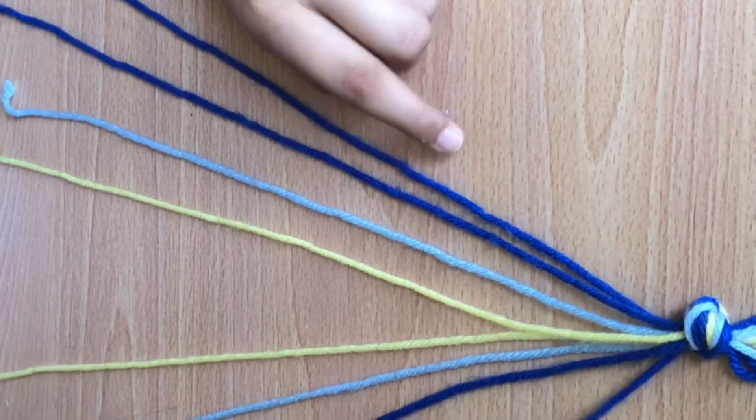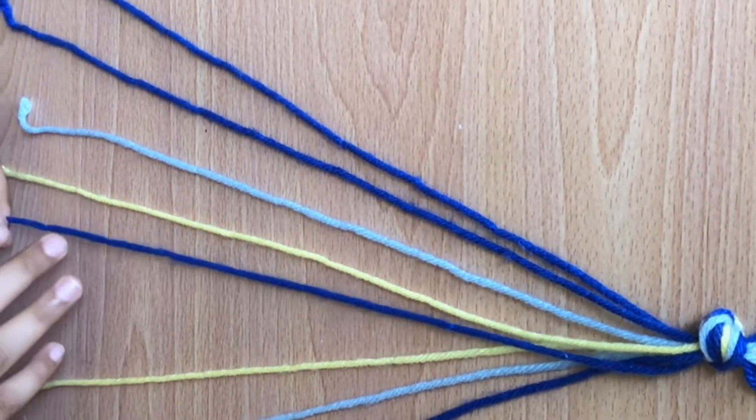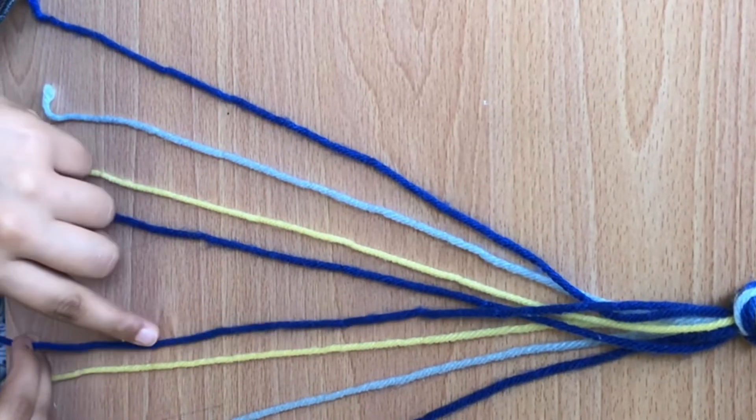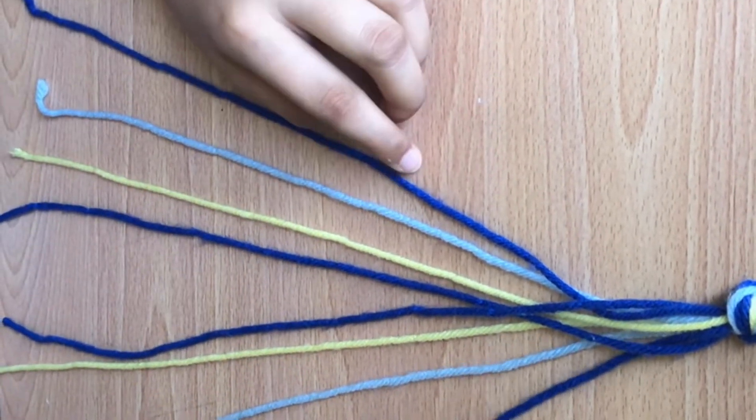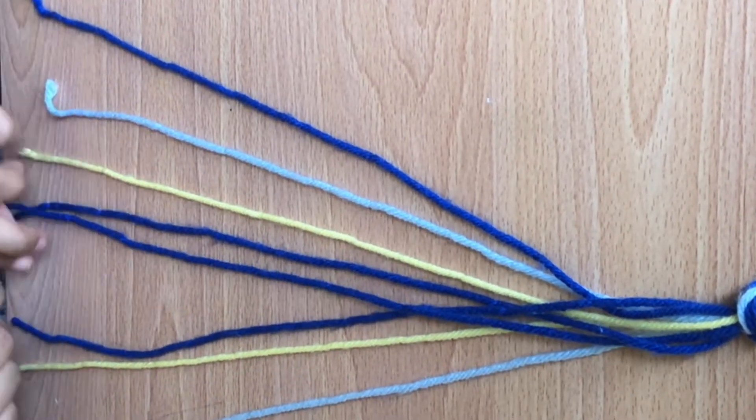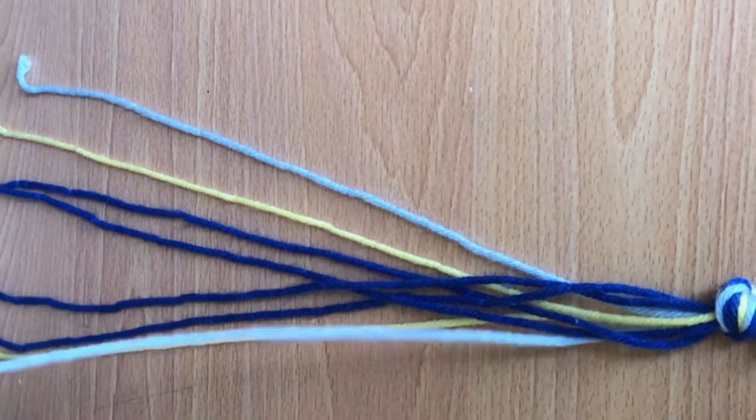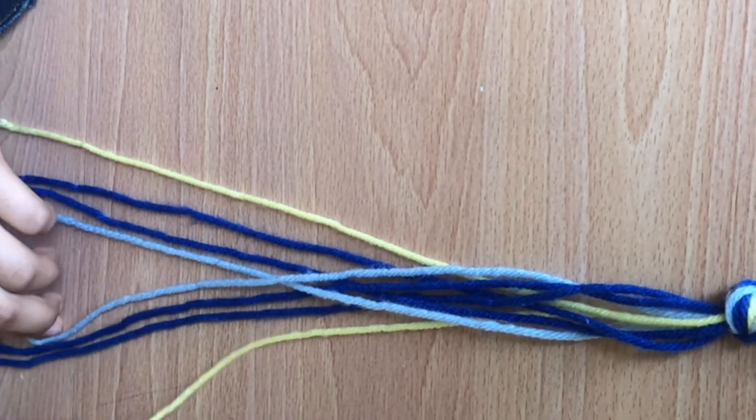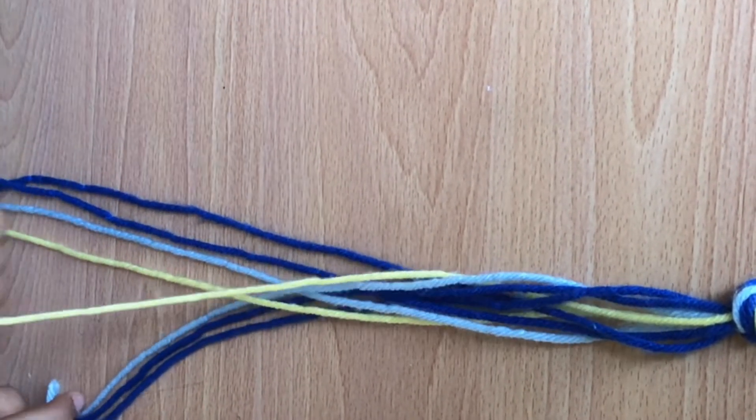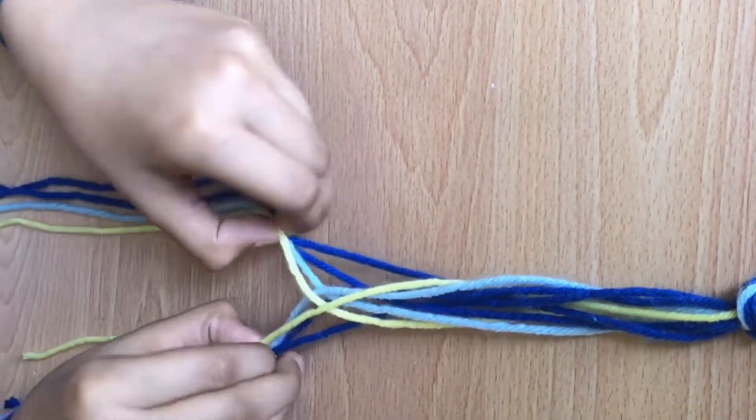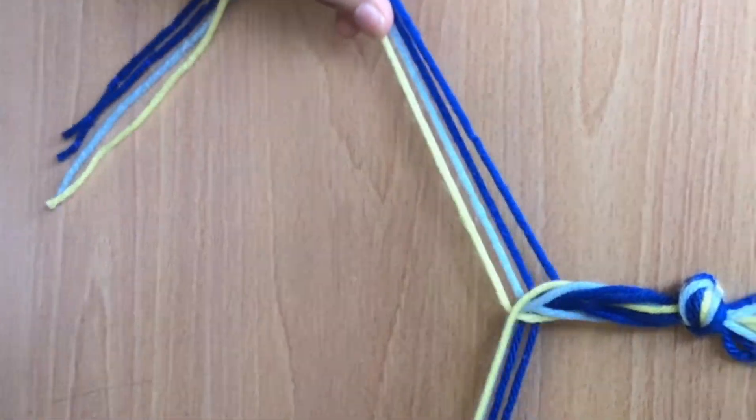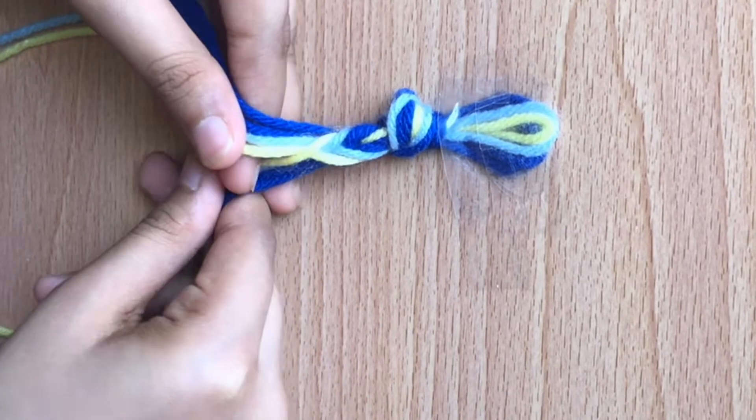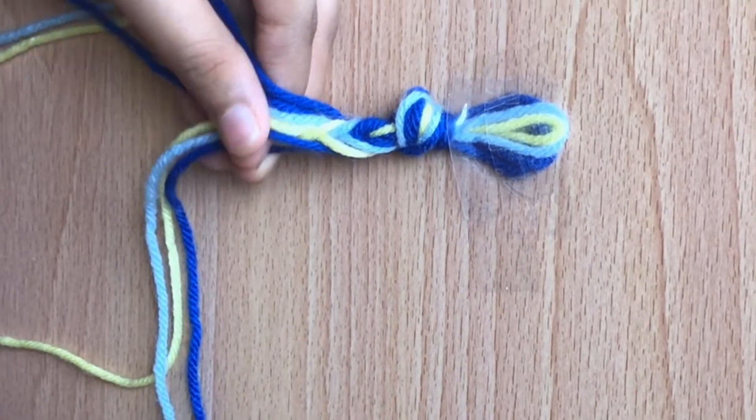Now start with the right most string, cross over and bring it in the middle between the two yellows and then do it to the left side too. Then the right then the left and just keep on going with right and left. After you're done with yellow hold the two sides and pull tight.